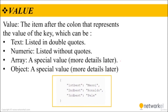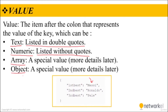Now let's go ahead with the value. The value is the item after the colon that represents the value of the key. A value can be text, which should be listed in double quotes. A value can also be numeric — if numeric, it is listed without quotes. A value can also be an array or an object, and there are some special values we will cover in later sections.